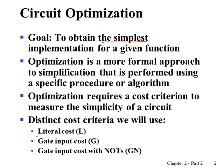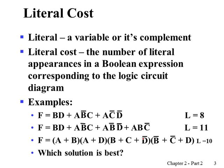The first criteria is literal cost, and the second is gate input cost. Gate input with NOTs is another cost criteria. We have notation L, G, and GN for each of those. Literal cost is simply the number of literal appearances in the Boolean expression, where a literal means a variable or its complement.